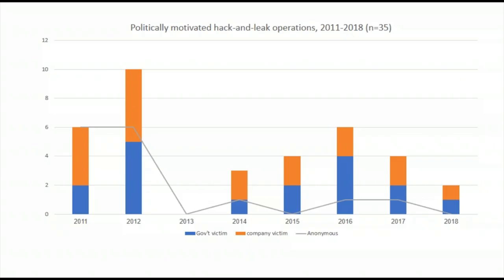Finally, you can see that both public and private sectors are roughly equally at risk from these operations — the blue is governments, the orange is companies, and it's roughly a 50-50 split about whether targets are in the public or private sector.